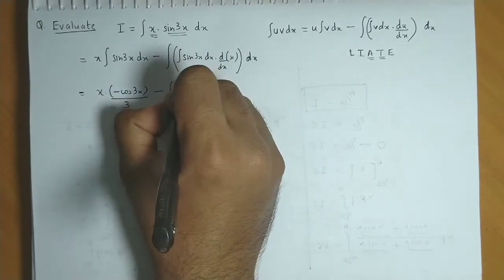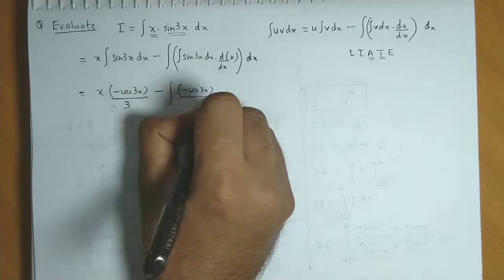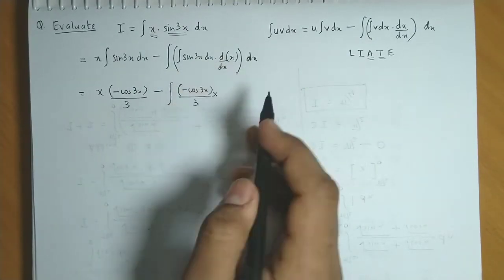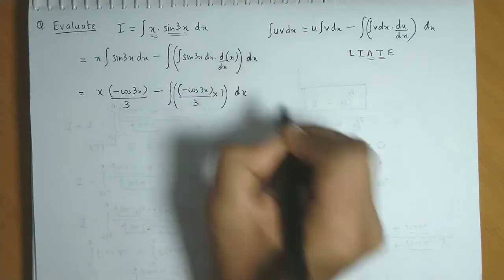integration of sine 3x is again minus cos 3x upon 3, times derivative of x which is 1. So we have obtained this term, and we write dx.